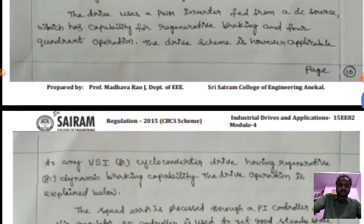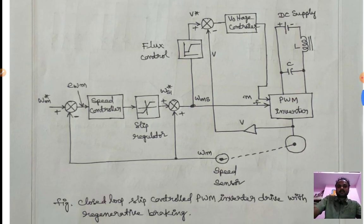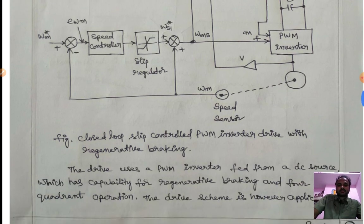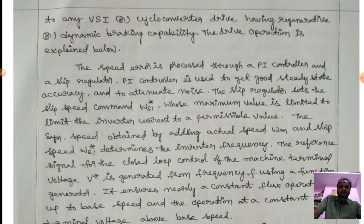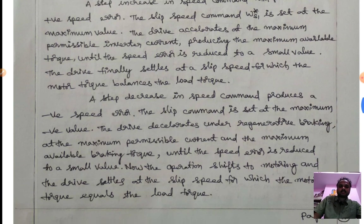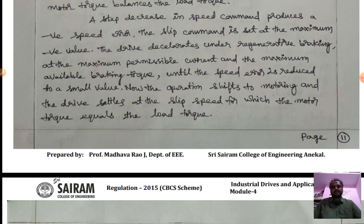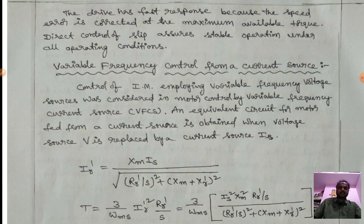You should practice this block diagram well, as it is a very important question for exams. You should be able to explain how the reference WS1 and WM are taken to produce synchronous speed, and how the error changes when the step increases or decreases. In the next video, we will see variable frequency control from a current source.